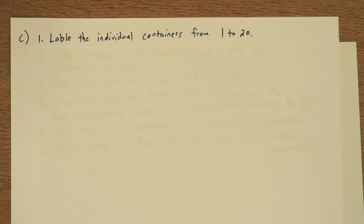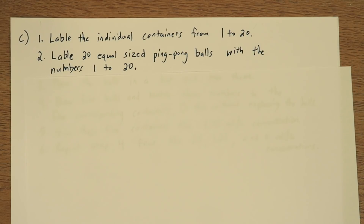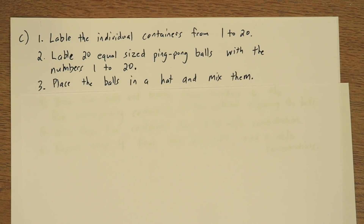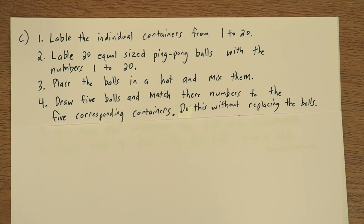Step 1: label the individual containers from 1 to 20. Next, label 20 equal-sized ping pong balls with the numbers from 1 to 20. Then place the balls in a hat and mix them. Next, draw 5 balls and match their numbers to the 5 corresponding containers. Do this without replacing the balls.